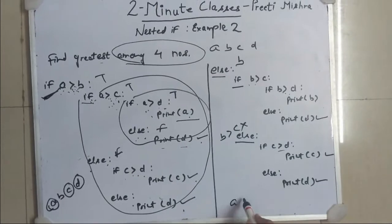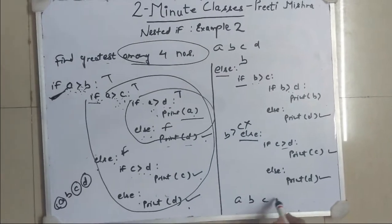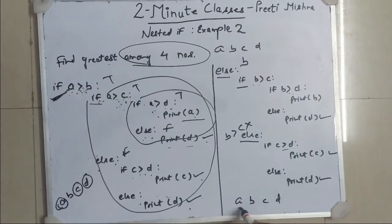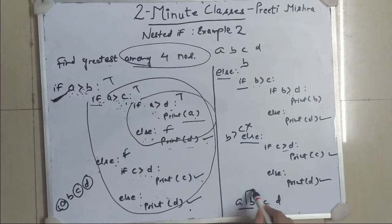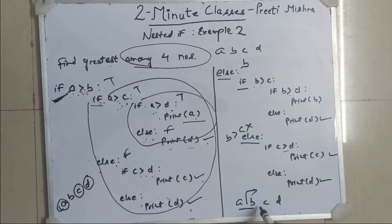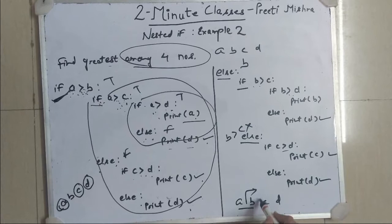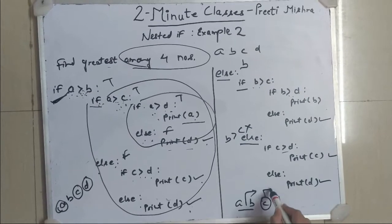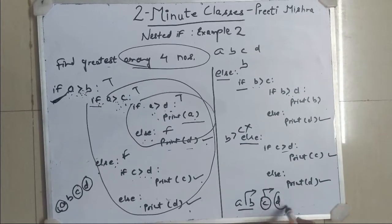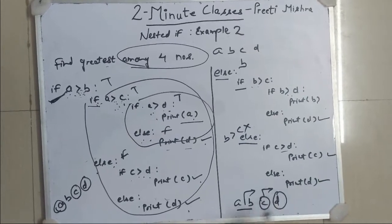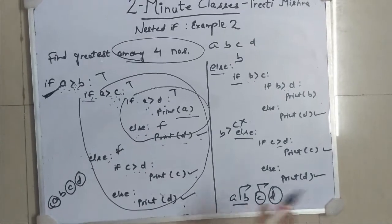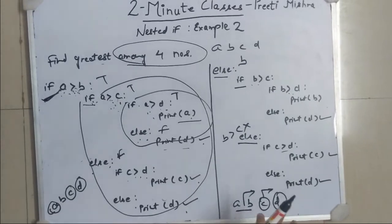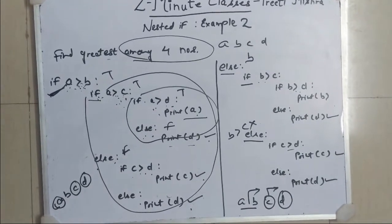We are gradually comparing each number with the other — finding the greater of these two, then comparing it with C, then finding the greater and comparing it with D. So this completes the example of finding the greatest of four numbers.